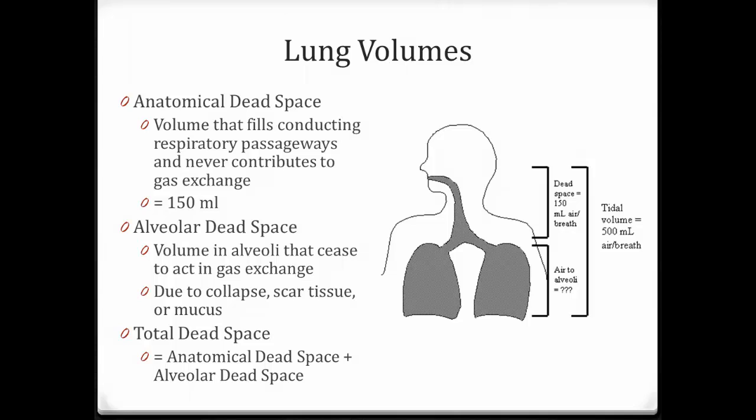Other lung volumes include the anatomical dead space. This is the volume of air that goes through the conducting zones, that is, the air that only makes it through the nose and then down through to the terminal bronchioles. That air never actually enters any of the respiratory passageways or the respiratory zone, so it's not involving gas exchange. That's about 150 mls.